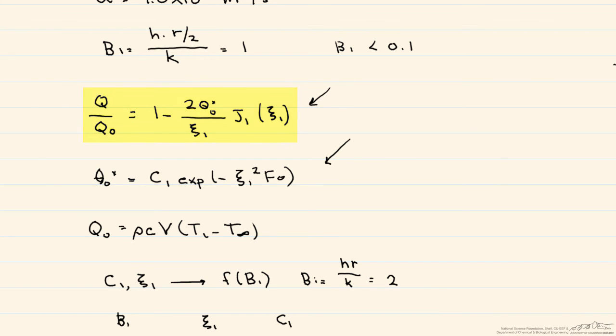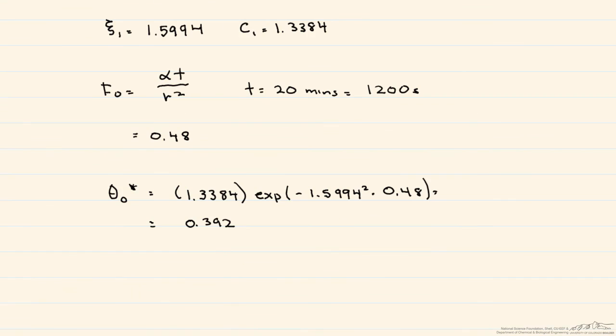So our Bessel function of 1.5994 is equal to 0.57.